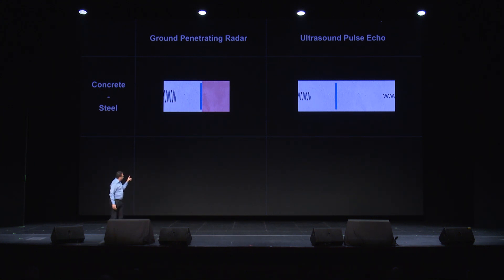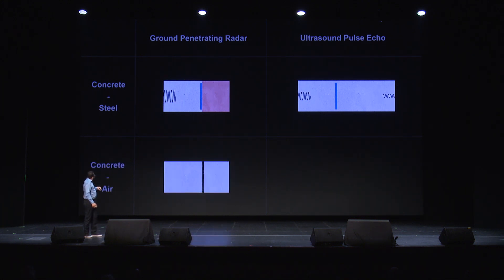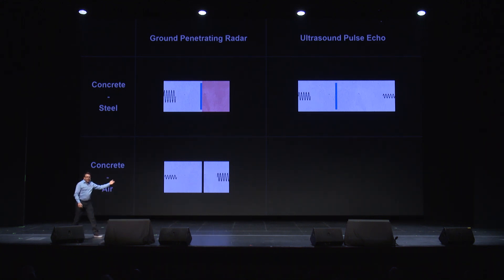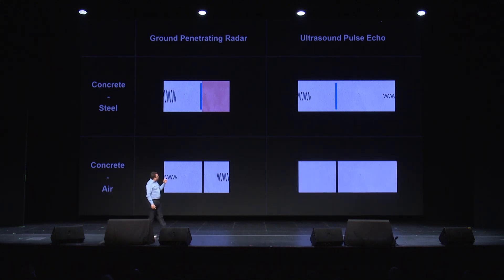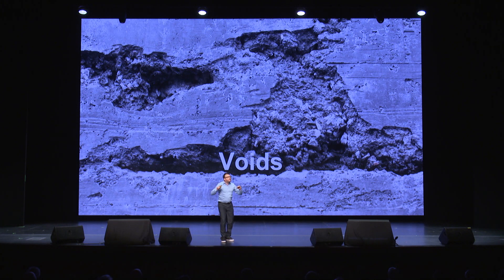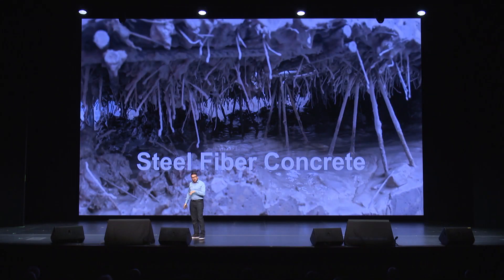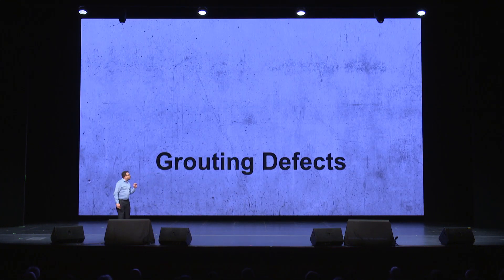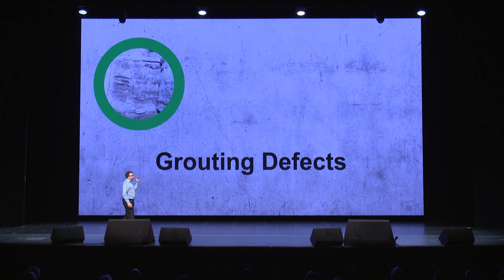When we analyze the second situation — air in concrete — the story is totally different. GPR waves will travel through air, and only part of them will reflect back. Ultrasonic pulse echo waves, though, will be almost fully reflected back, like a mirror. So we understand why voids and delaminations will be fully visible using ultrasonic pulse echo waves.